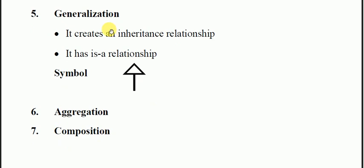Then generalization shows the inheritance relationship. It creates an inheritance relationship, it has is-a relationship. Generalization is denoted by this symbol. These concepts are association, generalization, aggregation, and composition. These concepts will be discussed in different lectures. We will discuss these concepts in our other lectures. We are focusing on the class diagram.